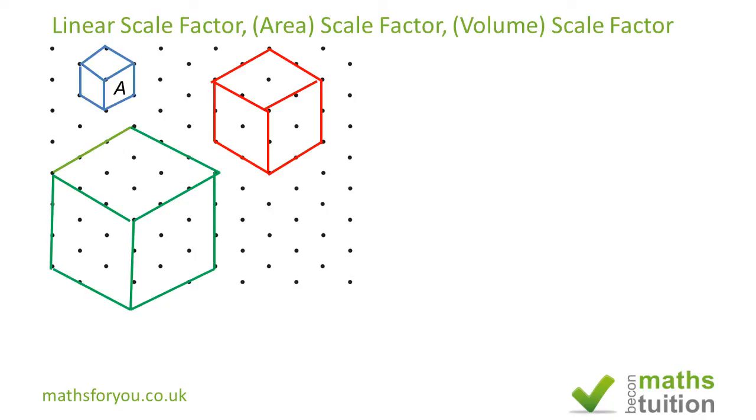Essentially what we have here are three cubes. Cube A is the object which has been transformed by enlargement by a linear scale factor of 2. The enlarged objects B and C are called the images.